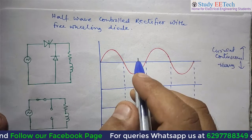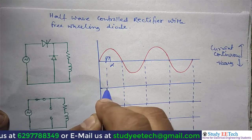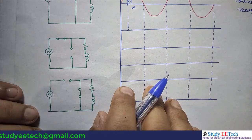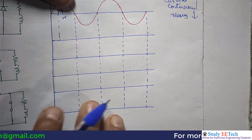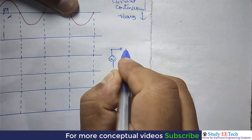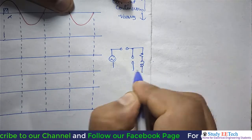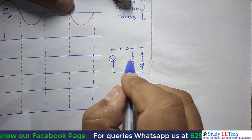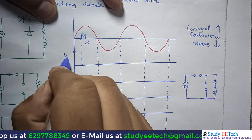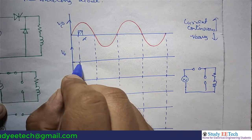We are triggering the device the same way, at some firing angle alpha. From zero to alpha, the state of the switch is off — the alternating voltage source is present but we are not triggering the thyristor, and this device is also not conducting. So we get no output voltage and no current in this interval.